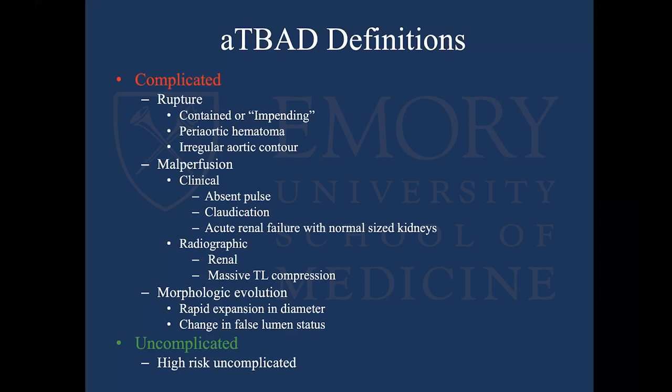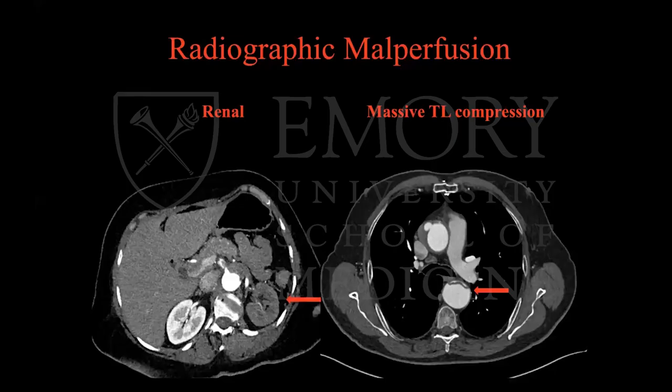Radiographic malperfusion looks like this — on CT scan, one kidney won't light up. Or this is called massive true lumen compression or pseudo-coarctation, where the false lumen, which is always the bigger lumen, is compressing the true lumen, resulting in diminished blood flow. Think of it as a lack of inflow into the abdominal aorta and your visceral organs. That is also an indication for a stent graft.